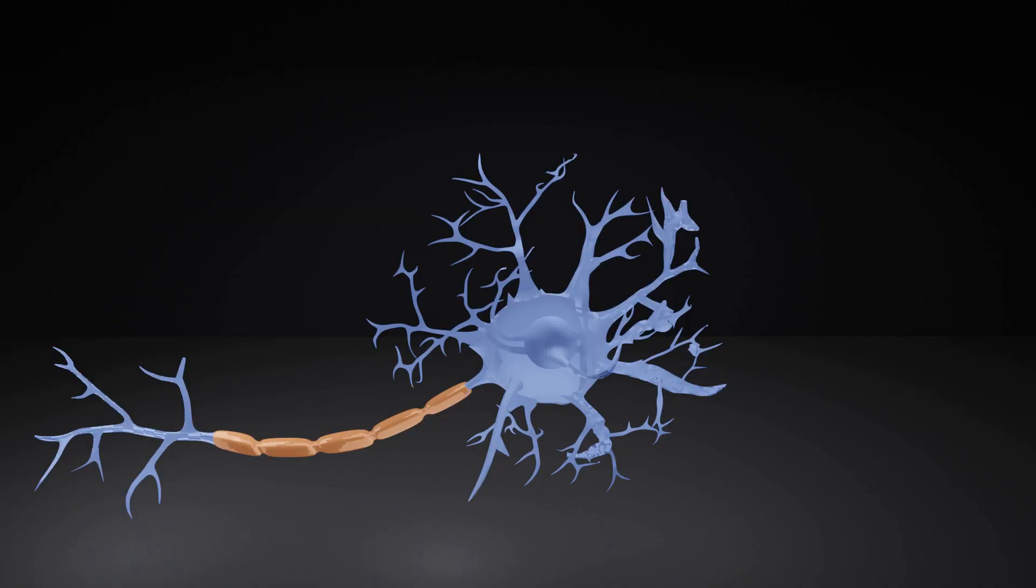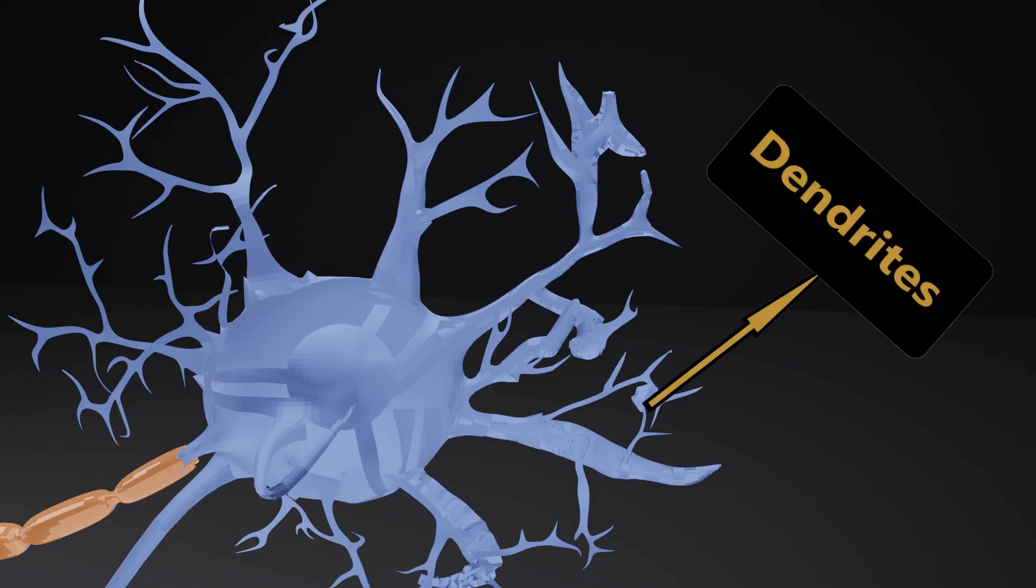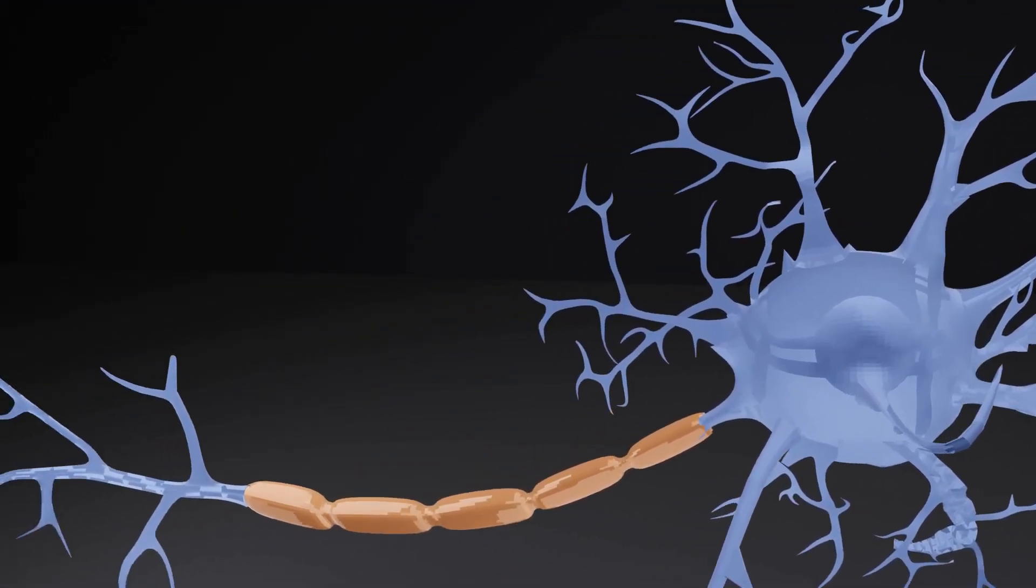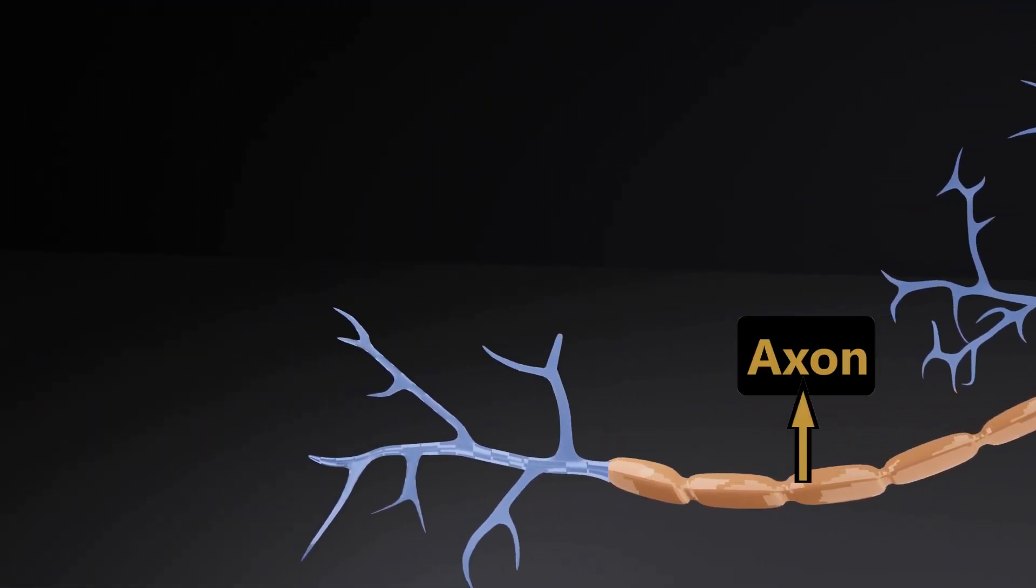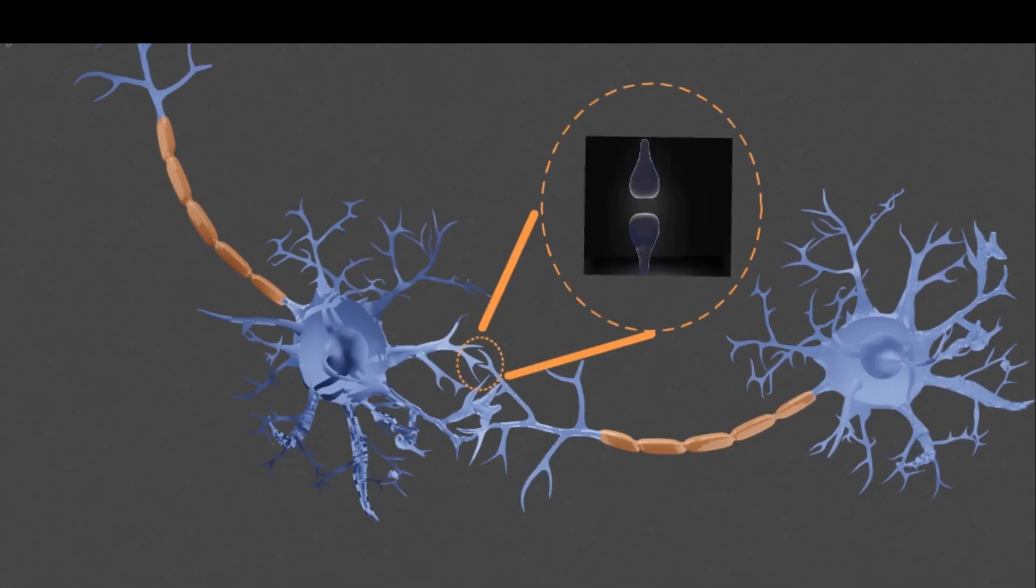The fine projections of the cell body which receive messages are called dendrites. A long projection of the cell body which conducts messages away from the cell body is called the axon. Terminal ends of the axons transmit the messages to the next cells.